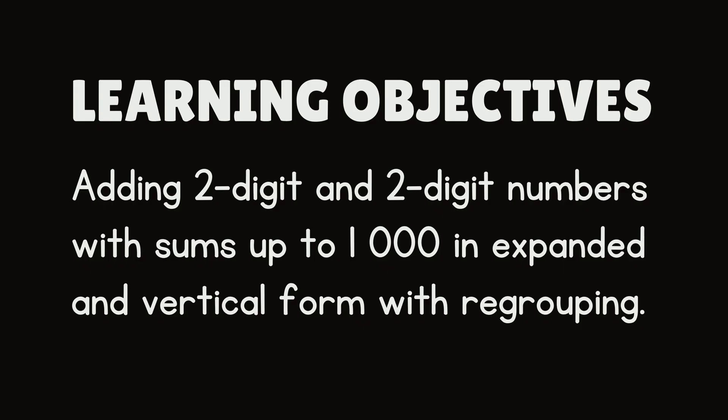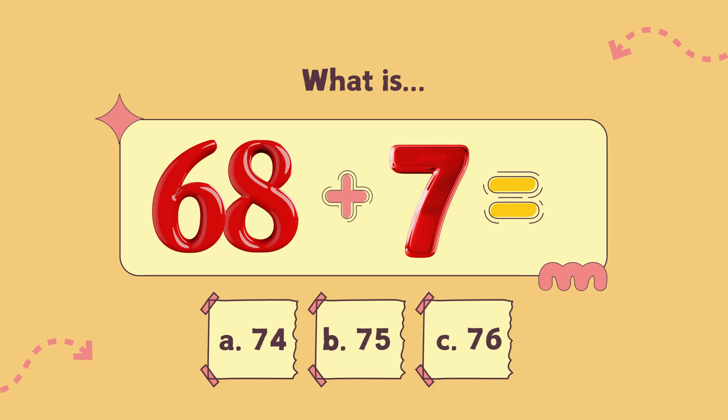Learning objectives: Adding two-digit and two-digit numbers with sums up to 1000 in expanded and vertical form with regrouping. What is 68 plus 7? A. 74, B. 75, C. 76. The answer is letter B, 75.